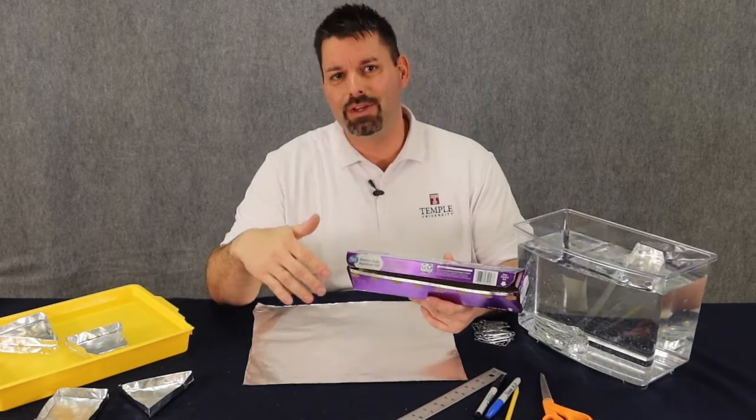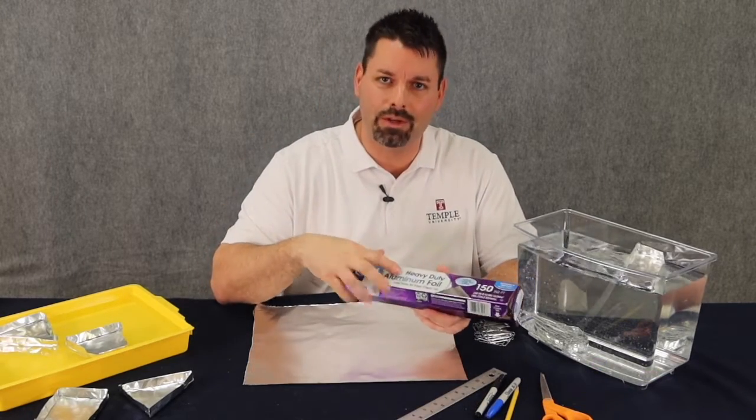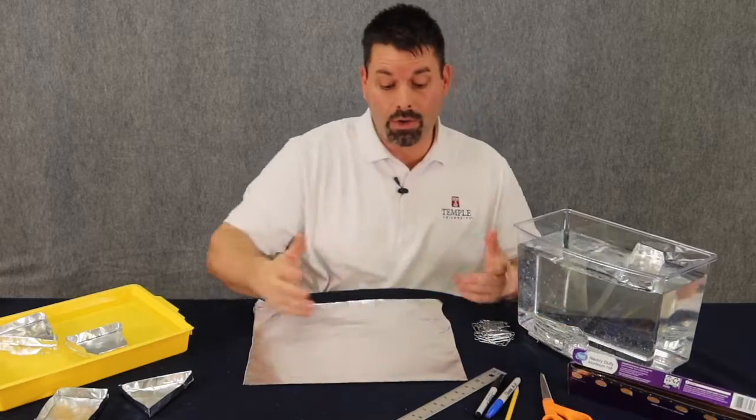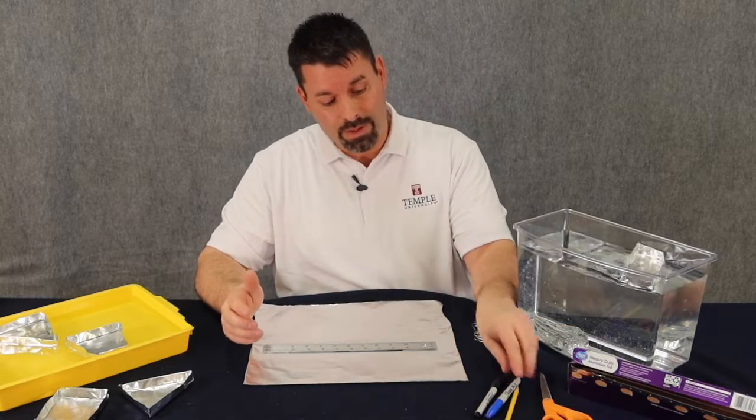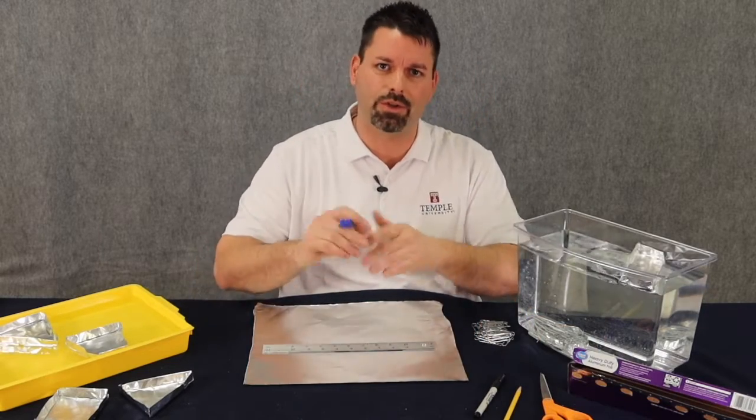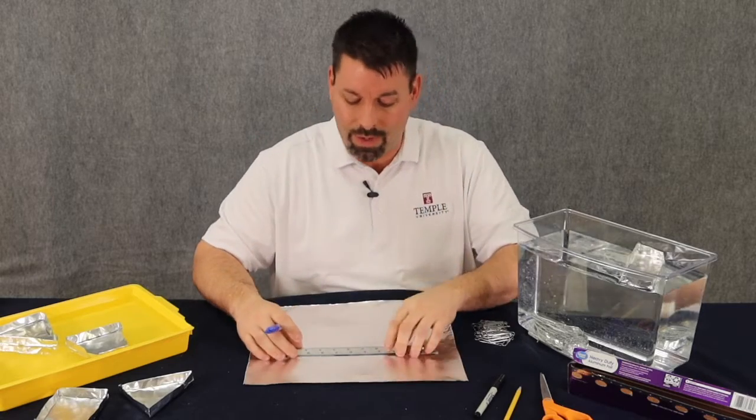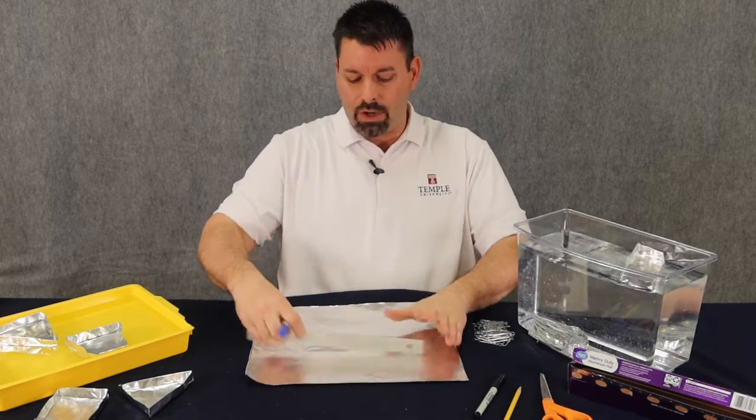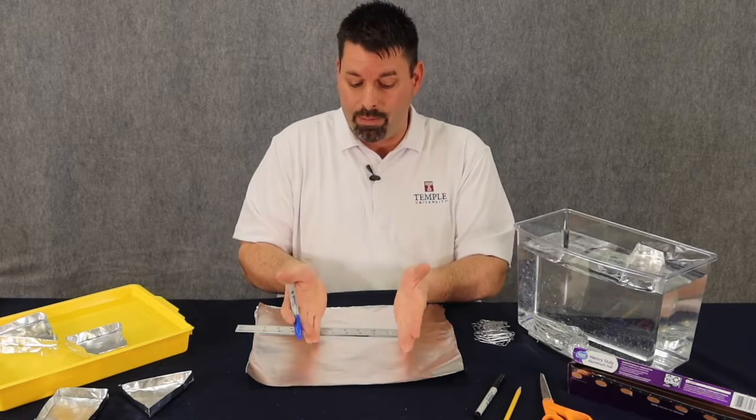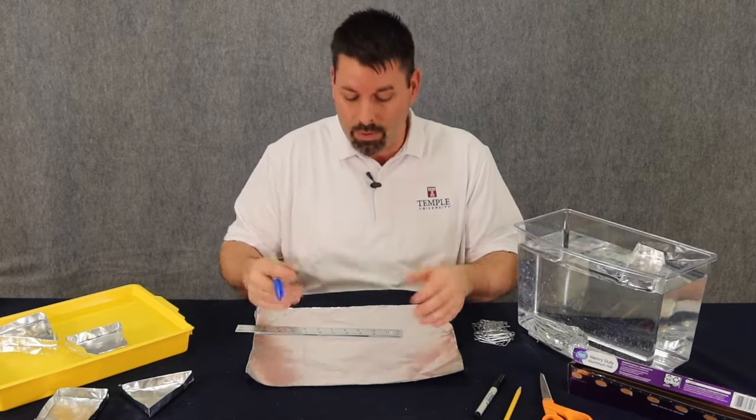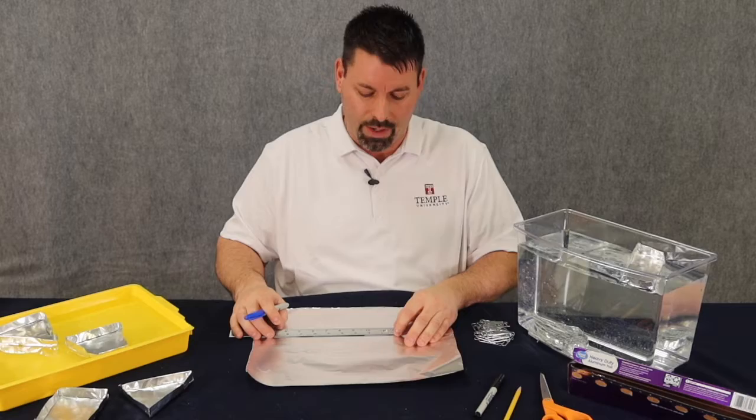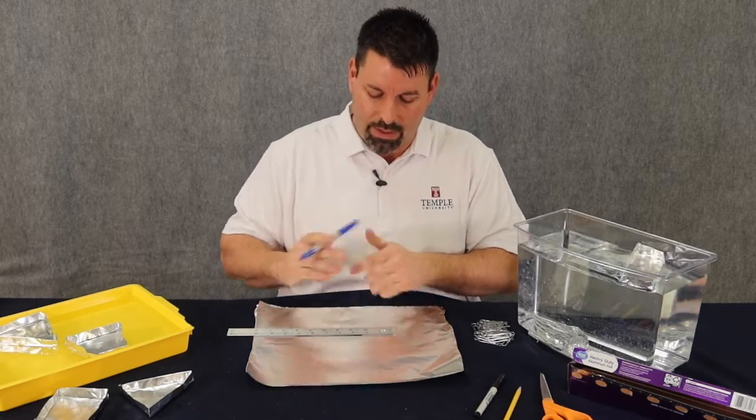Now for this STEM activity, we recommend using heavy duty aluminum foil. Then really all you need is a ruler and a pencil, but in this case we're going to use a marker so it shows up better so that you can see. I'm going to start by taking my piece of aluminum foil and thinking about a shape that I want to draw for the bottom of my boat. I'm just going to use a rectangle to make it nice and simple.